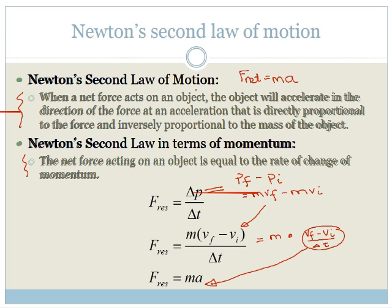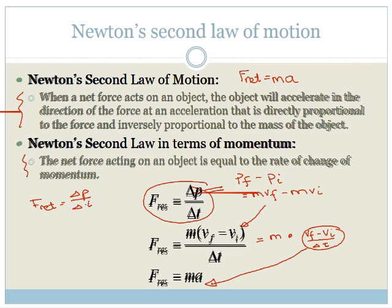Therefore, you can see that Newton's second law of motion, which we know is F net equals MA, is interchangeable with this equation here, which says that F net equals delta P over delta T, the rate of change of momentum. Please learn these laws. We're going to be using them in the next couple of examples.